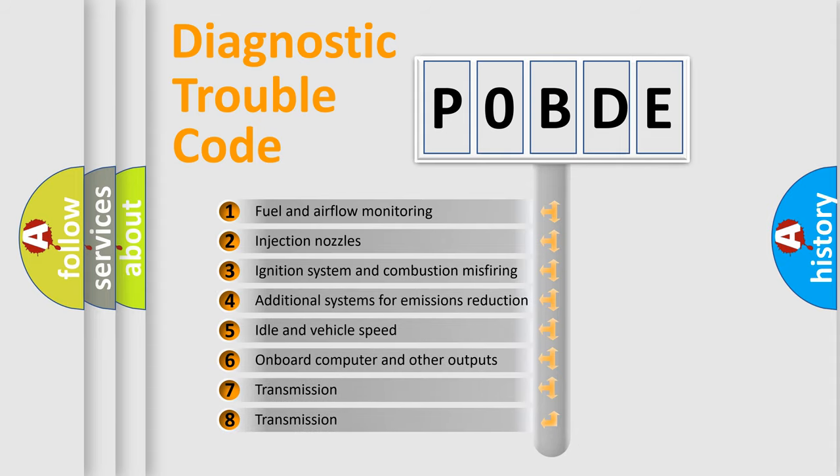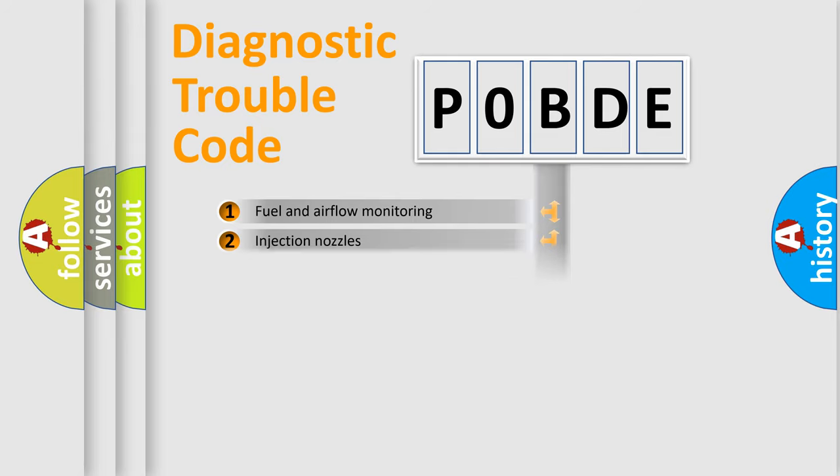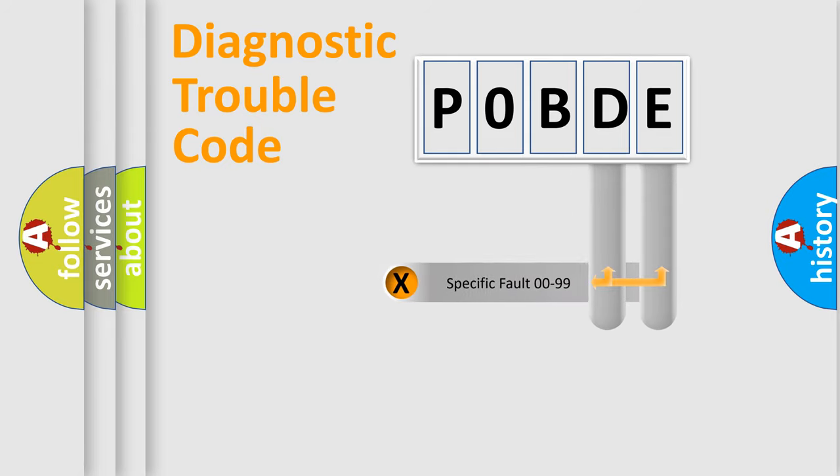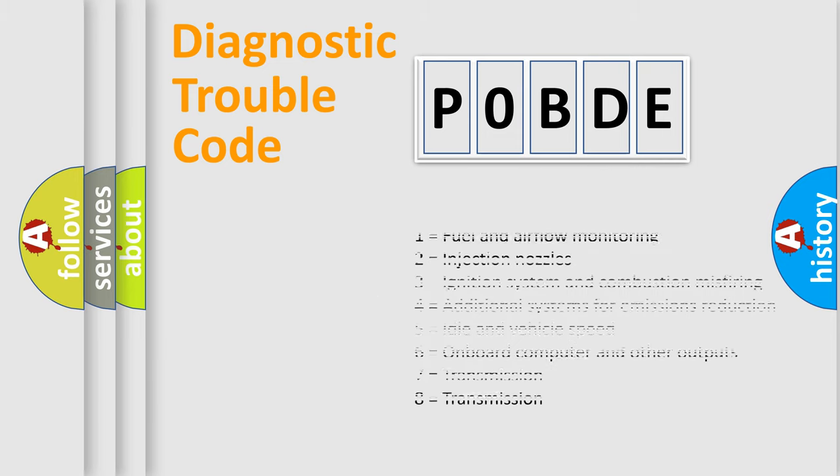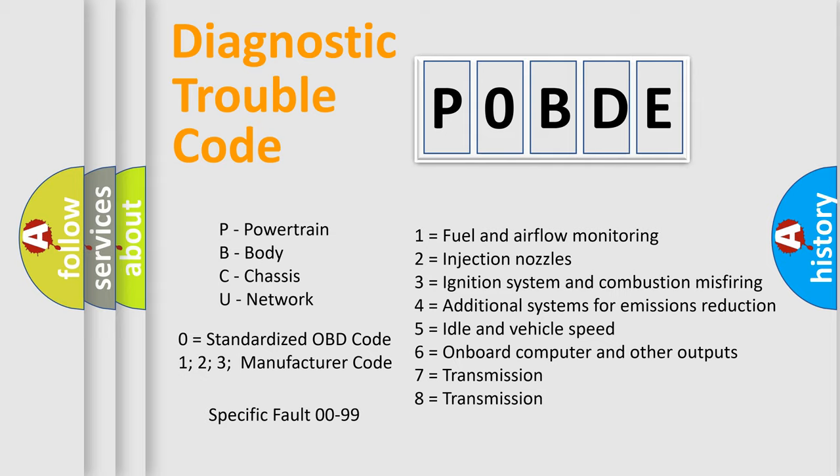The distribution shown is valid only for the standardized DTC code. Only the last two characters define the specific fault of the group. Let's not forget that such a division is valid only if the second character code is expressed by the number zero.